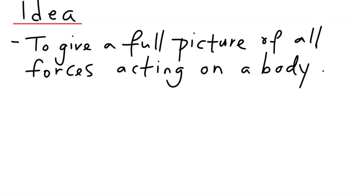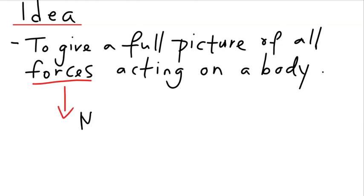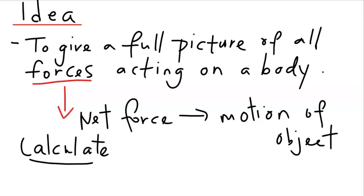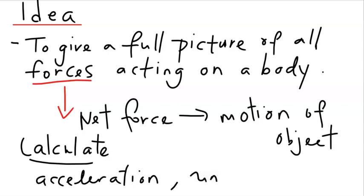The idea behind a free-body diagram is to give a full picture of all forces acting on a particular body. These forces combine to produce the net force, which then describes the motion of the object. If you know the net force, you can calculate things like acceleration. And if you are given acceleration, you can use Newton's second law for net force to calculate even some of the unknown forces in the system.